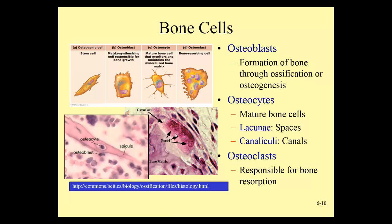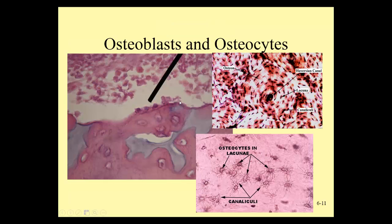Here we can see a large osteoclast with multiple nuclei — a very large cell. Here is the matrix that it is actively breaking down, where the enzymes would be acting to break down the bone matrix. On the surface of this bone we can also see an osteoblast, and here we can see the osteocytes in the lacuna. These white spaces are the cavities around each osteocyte.